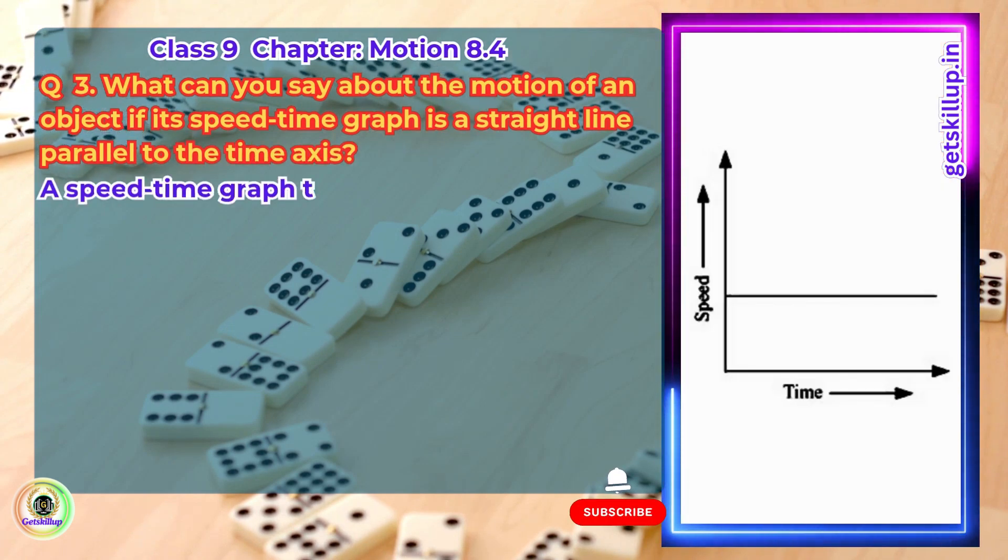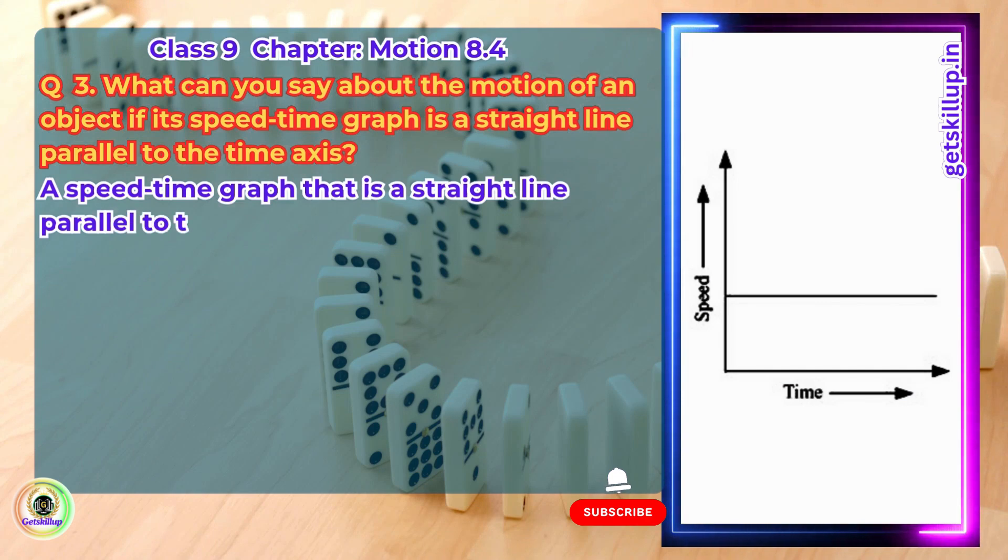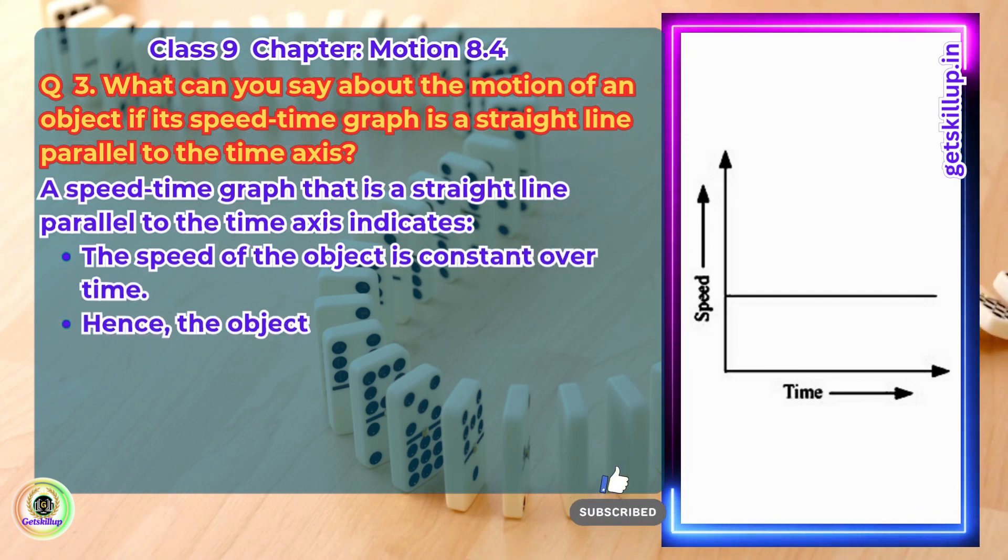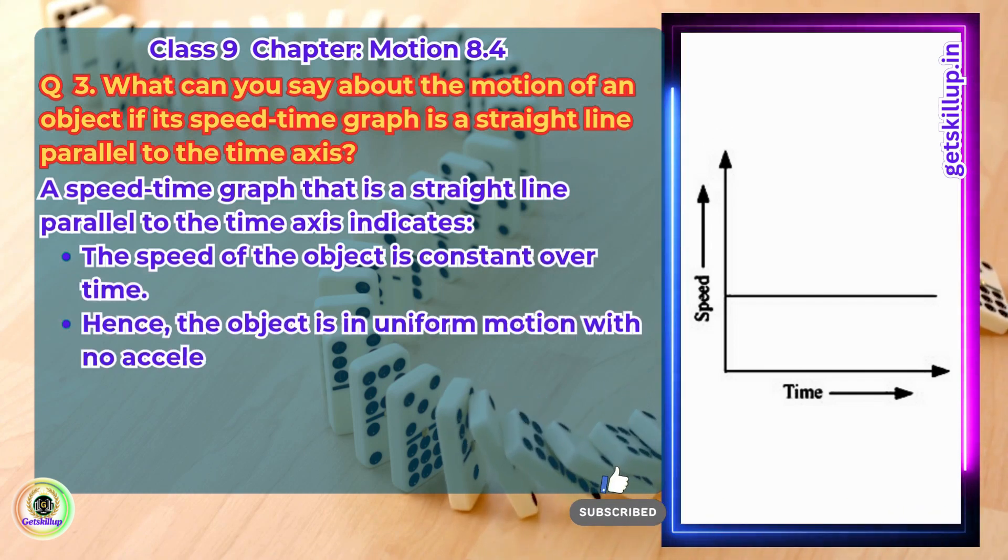Answer: A speed-time graph that is a straight line parallel to the time axis indicates the speed of the object is constant over time, hence the object is in uniform motion with no acceleration.